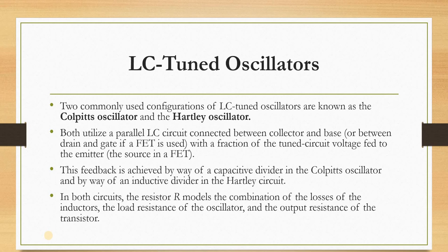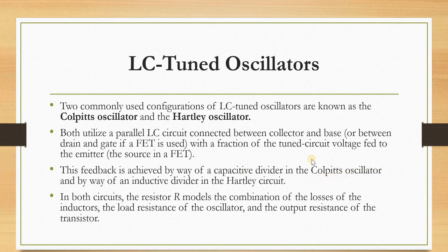Both utilize a parallel LC circuit connected between collector and base. If using a transistor, the LC tank circuit connects between collector and base. If using a FET, the tank circuit connects between drain and gate. In the Colpitts oscillator, feedback is achieved via a capacitive divider (two capacitors); in the Hartley circuit, via an inductive divider (two inductors).